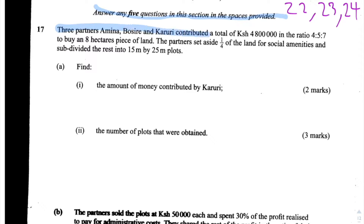We're told there are three partners who contributed a total of 4,800,000 shillings in the ratio 4:5:7 to buy an 8 hectare piece of land. So the 4 refers to the amount Amina contributed — I'll put an A for Amina. The 5 is the proportion that Bosire contributed — I'll put a B — and Karuri contributed 7, a portion of 7 over 16.